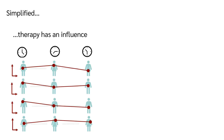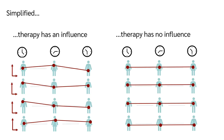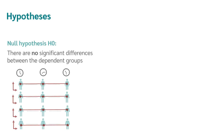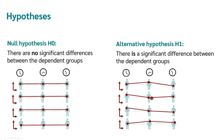Simplified: in one case, the therapy has no influence on pain perception and the pain does not change over time. In the other case, it does change. This gives us a good transition to the hypotheses. In the Friedman test, the null hypothesis is that there are no significant differences between the dependent groups, and the alternative hypothesis is that there is a significant difference between the dependent groups.